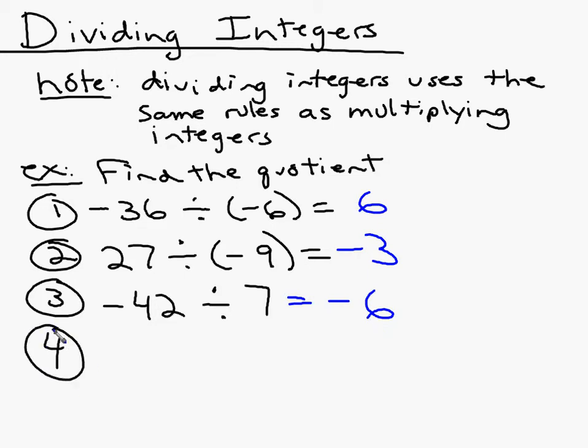How about 0 divided by negative 5? Well, 0 divided by any number is 0. Not negative 0, just 0. There's no such thing as negative 0. Let's do one more of those.